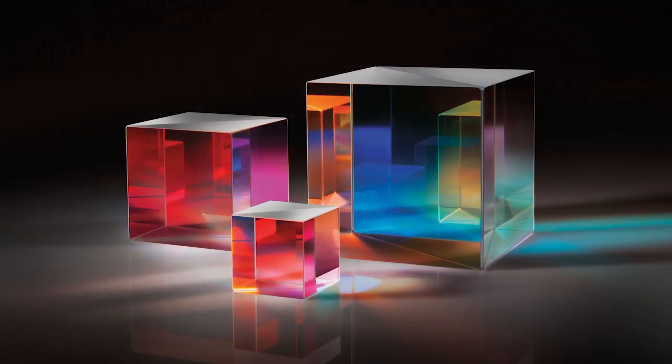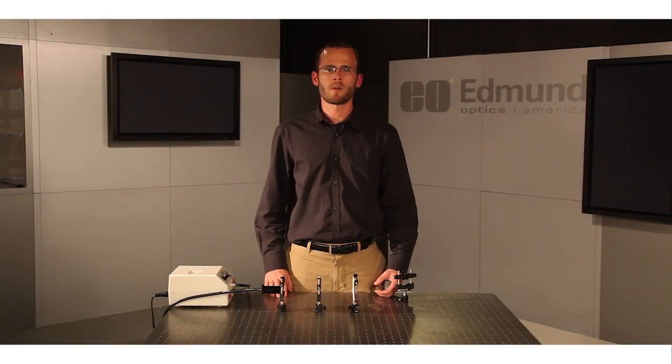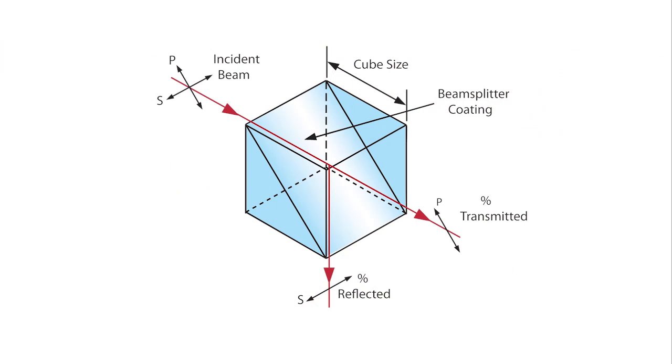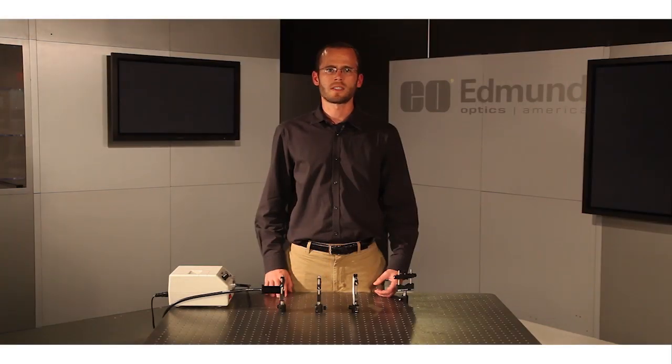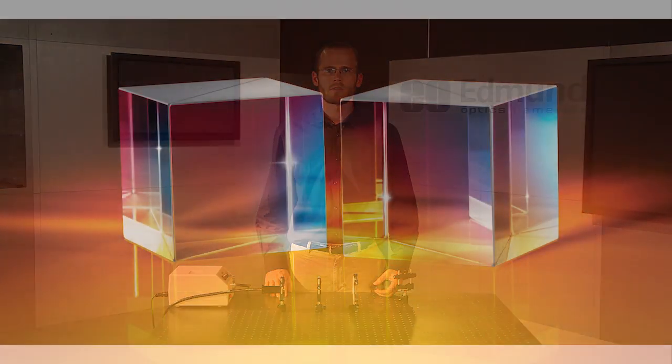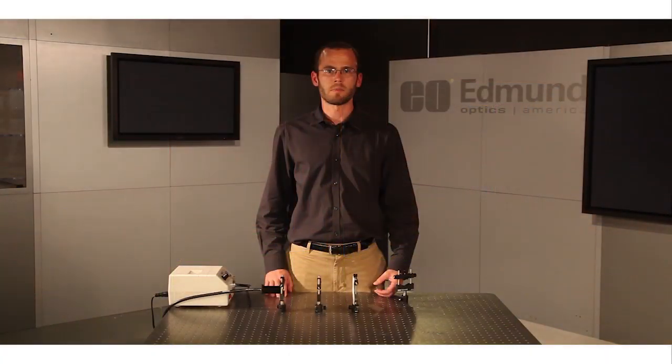Polarizing cube beam splitters are made by joining two right angle prisms with a coated hypotenuse. The polarizing coating is typically constructed of alternating layers of high and low index materials that reflect s polarized light and transmit p. The result is two orthogonal beams in a form that is easy to mount and align. The polarizing coatings can typically withstand high power density. However, the adhesives used to cement the cubes can fail. This failure mode can be eliminated through optically contacting. While we typically see high contrast for transmitted beam, the reflected contrast is usually lower.